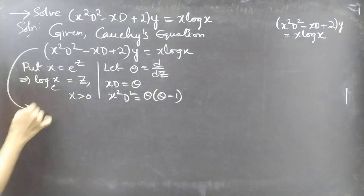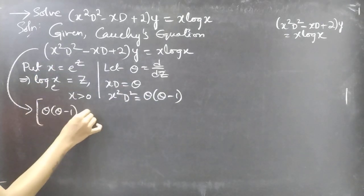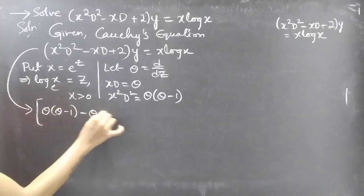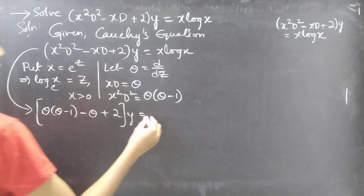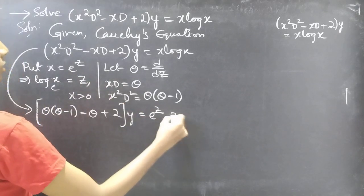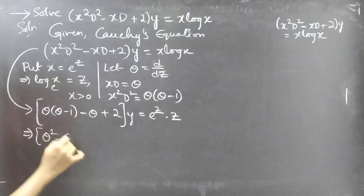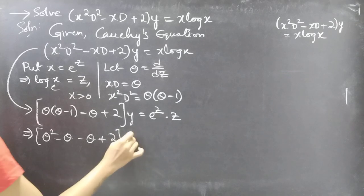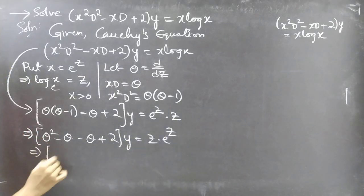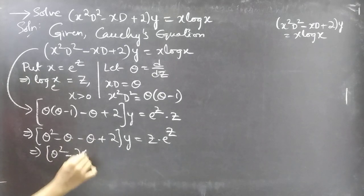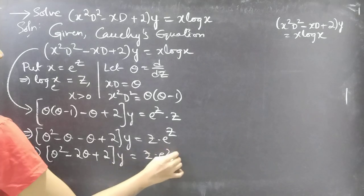Now the equation becomes: replace x squared D squared by theta(theta minus 1), and replace x D by theta. We get theta(theta minus 1) minus theta plus 2 into y equals e to the z times z. Expanding: theta squared minus theta minus theta plus 2 into y equals z times e to the z, which gives theta squared minus 2 theta plus 2 into y equals z e to the z.